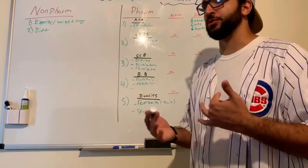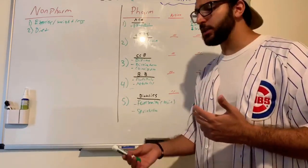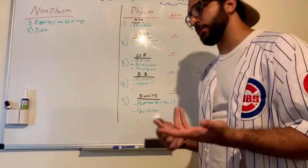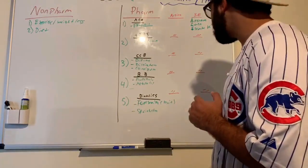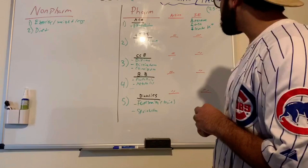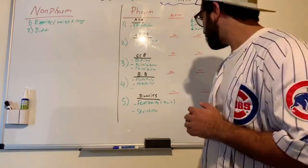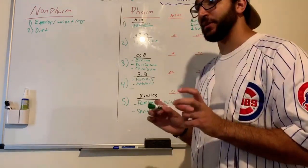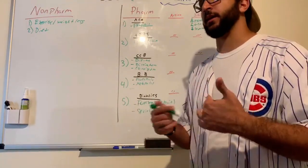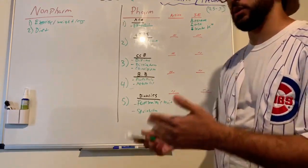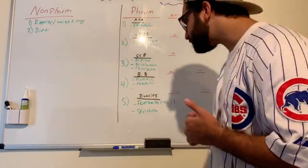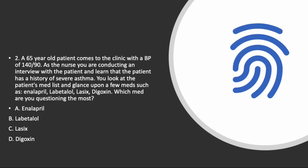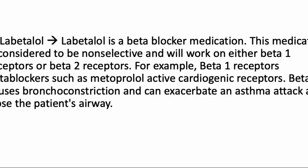Always monitor all electrolytes. A key side effect of diuretics is low blood pressure, so educate patients to call for assistance before getting out of bed to prevent falls. I've developed a practice question — go ahead, pause the video, read it, answer it, and the answer will be provided.